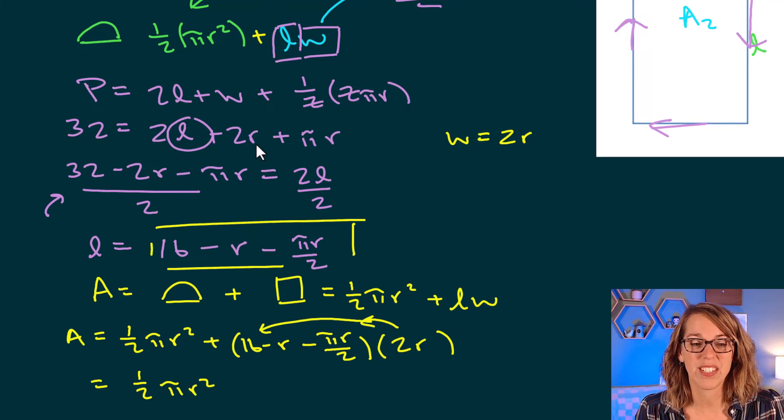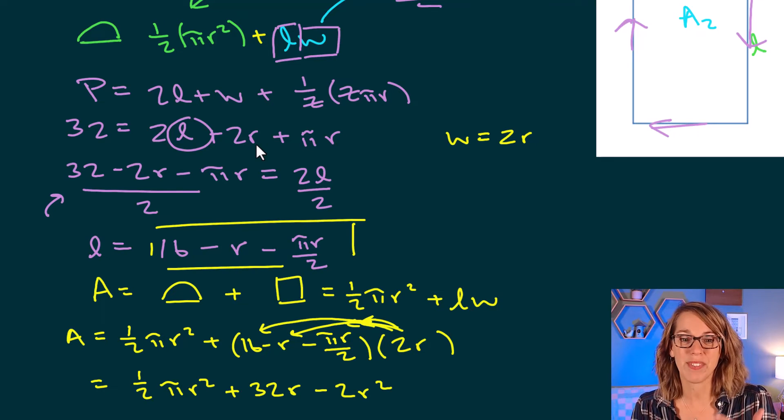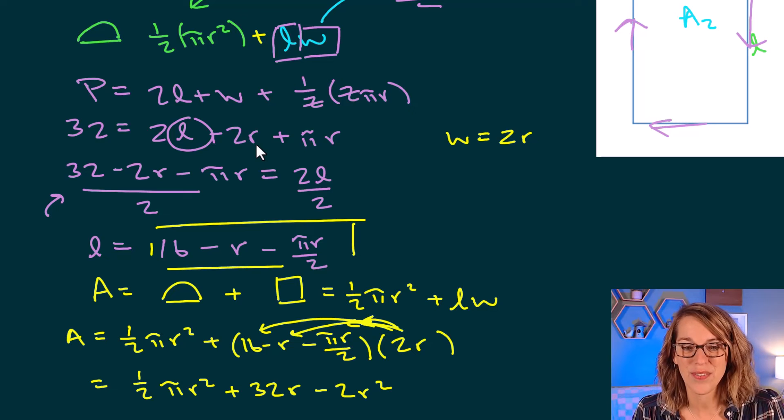2r times the negative r is going to be negative 2r squared. And then finally, 2r times the negative pi r over 2, I can cancel my 2 and I end up with an r squared.